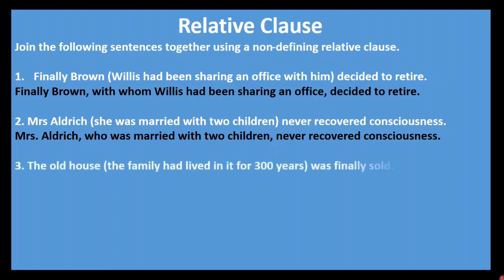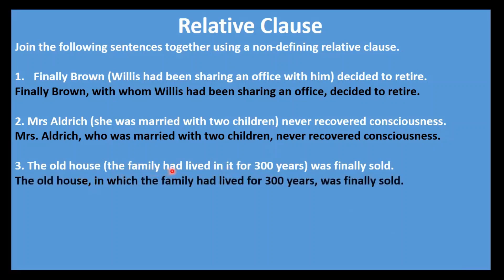Number three: The old house — (the family had lived in it for 300 years) — was finally sold. The old house is not a place here — it refers to an object, a thing. In the bracket we have 'it' with the preposition 'in' in front, so 'in which.' Answer: The old house in which the family had lived for 300 years was finally sold. We do not say 'in it' because it is replaced by 'in which.'